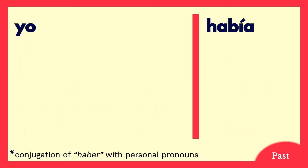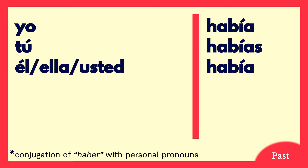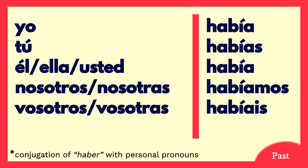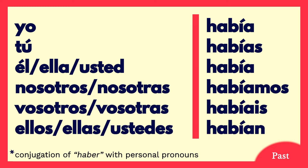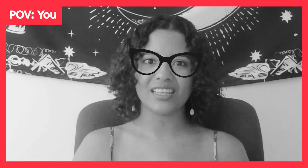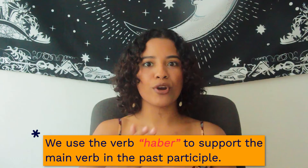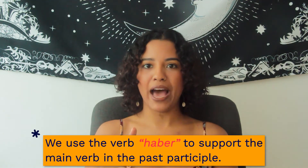And in the past: yo había, tú habías, él/ella/usted había, nosotros/nosotras habíamos, vosotros/vosotras habíais, ellos/ellas/ustedes habían. We use the verb haber to support the main verb in the past participle. Let's see this sentence: 'I have eaten at this place so many times.' Notice that the main verb is 'to eat,' but to express what we want, we use help from the verb 'to have' — that's what makes it an auxiliary verb.